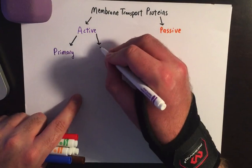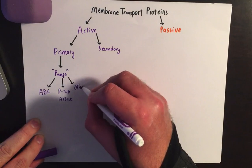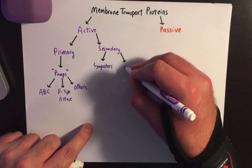For primary, most of what you're talking about is pumps. The three types of pumps include the ATP binding cassettes, the P-type ATPases, and then others. For secondary, we have the symporters and then the antiporters — one meaning the same direction and the other going in the opposite.